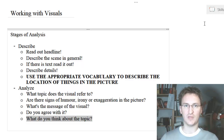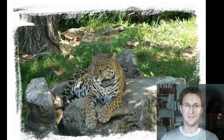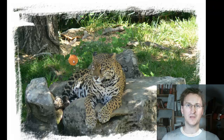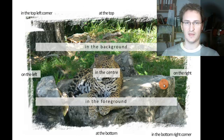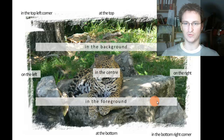Now let's take a look at an image I found on my hard drive — it's actually a photo I took some eight or nine years ago. It shows a leopard in the zoo of St. Louis. You might want to talk about the exact location of things in this picture. I've added a few captions to this image so you know which words to use. It's easiest to start from the center — in the center of the image I can see a leopard sitting on a rock.